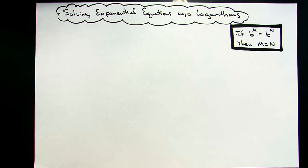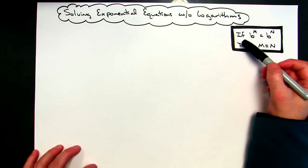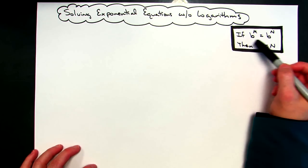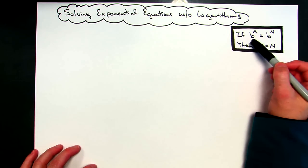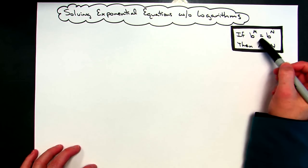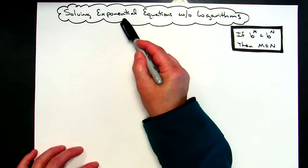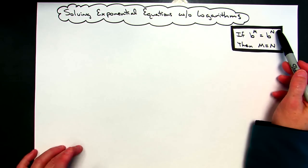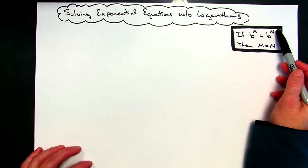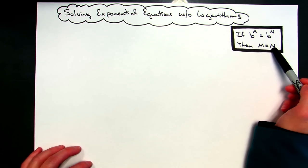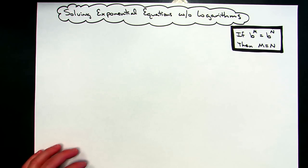Today we're going to take a look at solving some exponential equations without the use of logarithms. We're going to take advantage of a rule that says if we have two bases that are set equal to each other, then we can set the exponents equal to each other and solve. With an exponential equation, x will be in the exponent, giving us a nice little equation to solve for x.